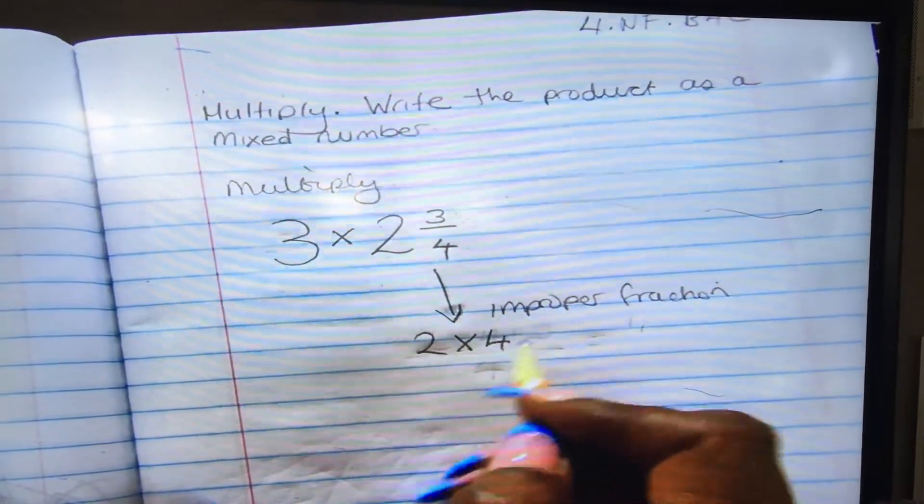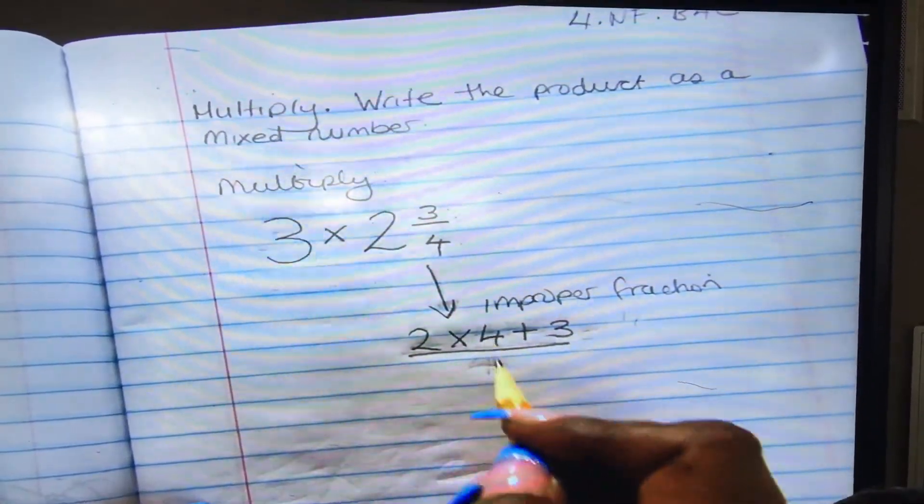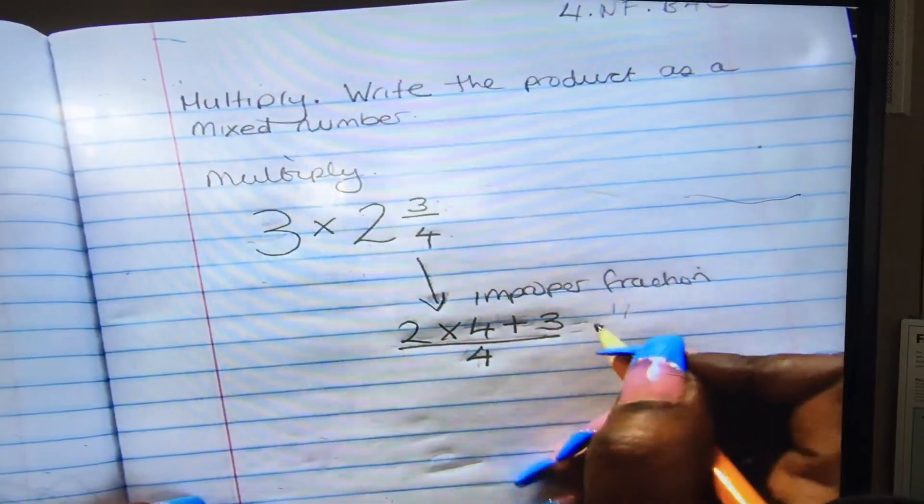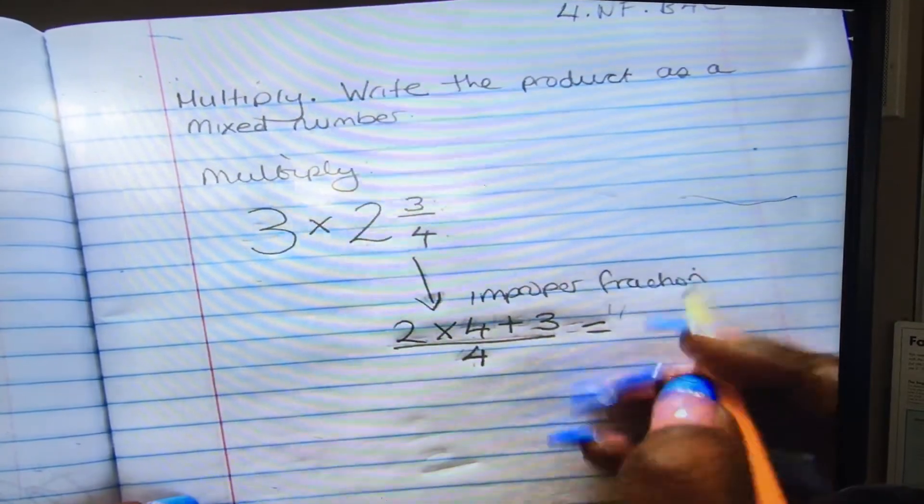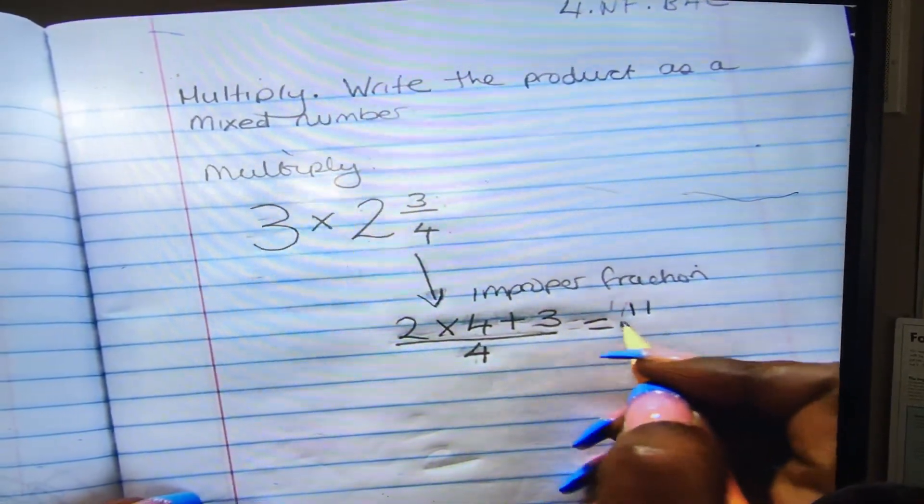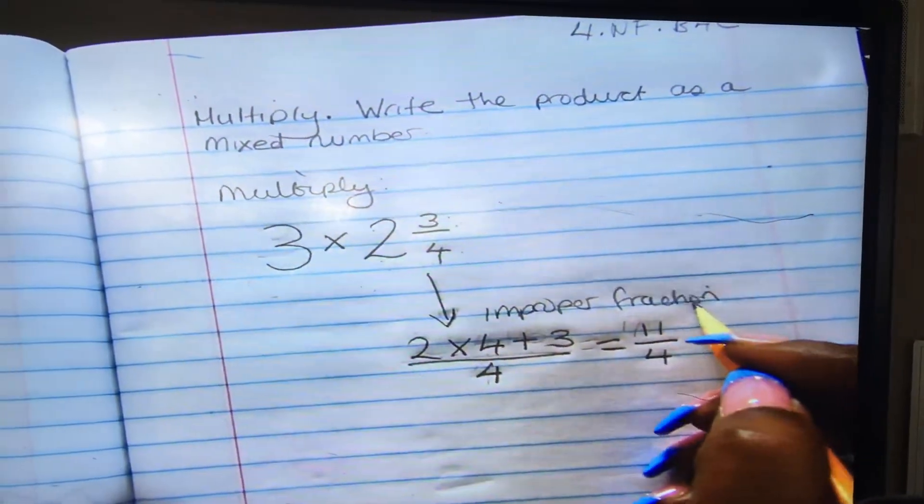And we put it over what? Four. Okay, very good. Let's do this. 2 times 4 is 8, plus 3 is 11 over 4. Okay, now we've just changed this into an improper fraction.